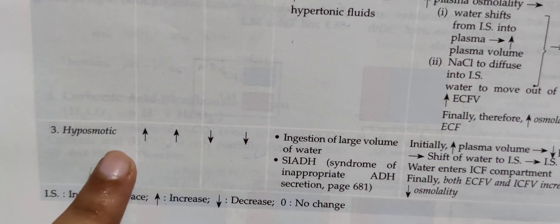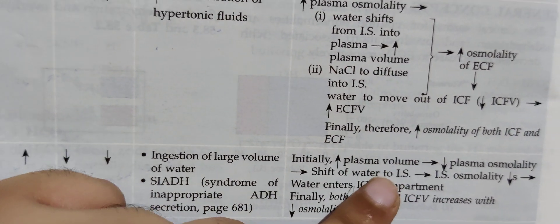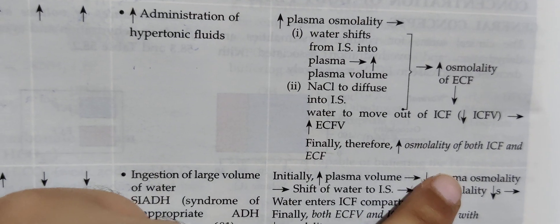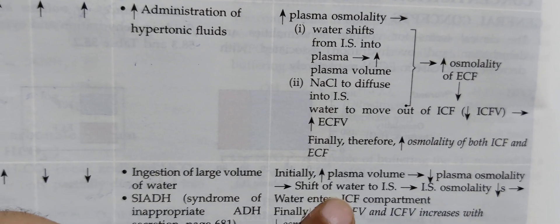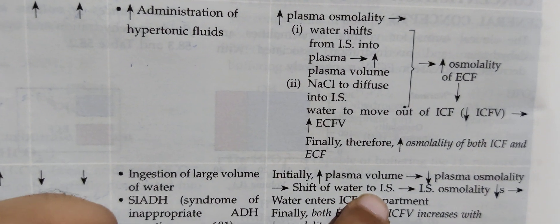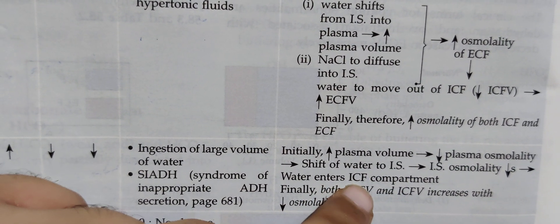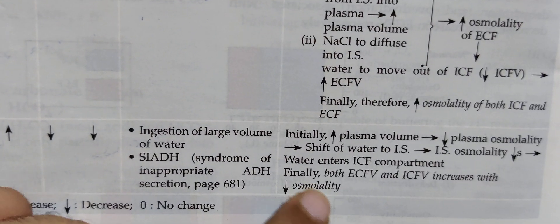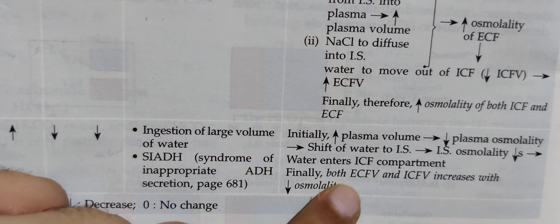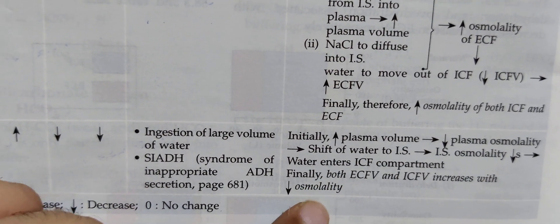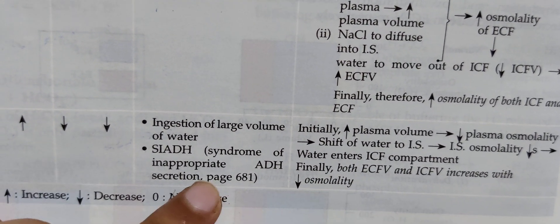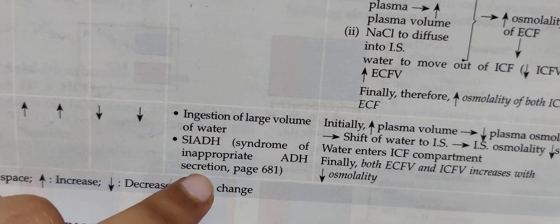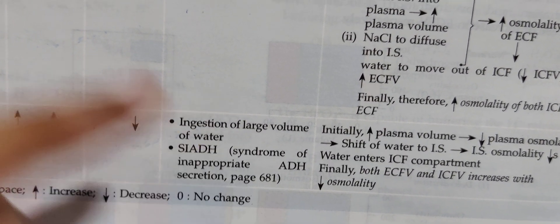In hypo-osmotic over-hydration, plasma volume initially increases, which decreases osmolality. Water moves to the interstitial space and then to the ICF. Therefore, both volumes increase and both osmolalities decrease. This occurs in syndrome of inappropriate ADH secretion (SIADH).